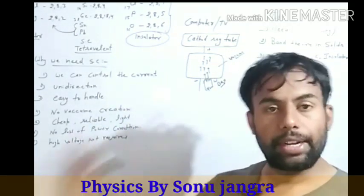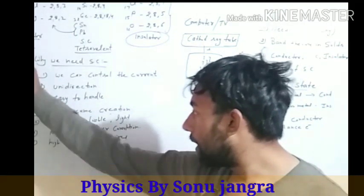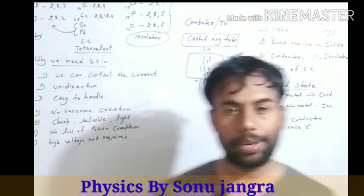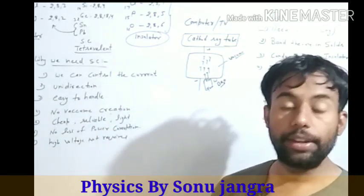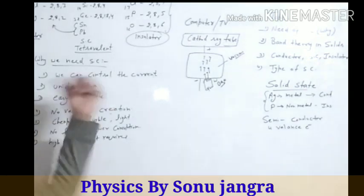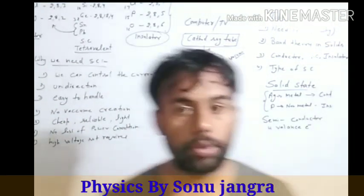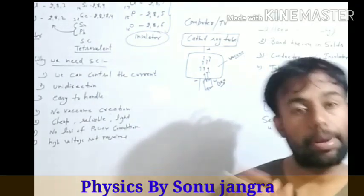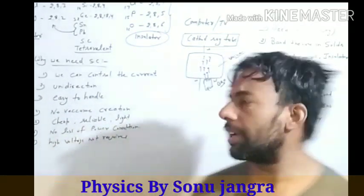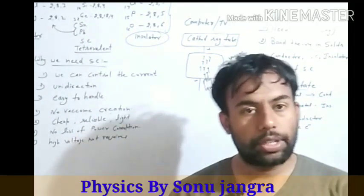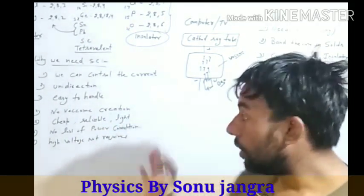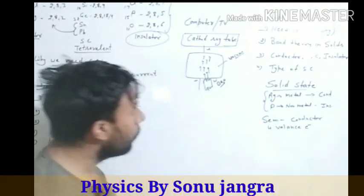The seventh point is that no high voltage is required. To start a normal cathode ray tube, a minimum of 100 volts is required. But for semiconductors, only 1, 2, 3, or 4 volts are needed to switch on the semiconductor. These are very useful characteristics that overcome the conductor, which is why in today's life we are completely based on semiconductors.